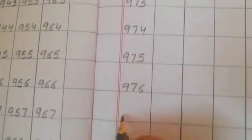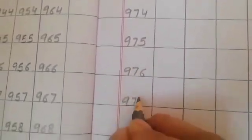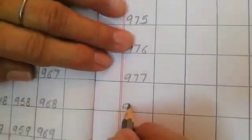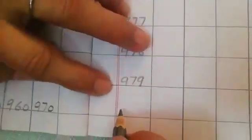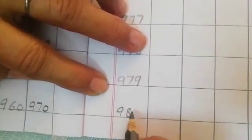976, 977, 978, 979. Then what comes after 979? 980.